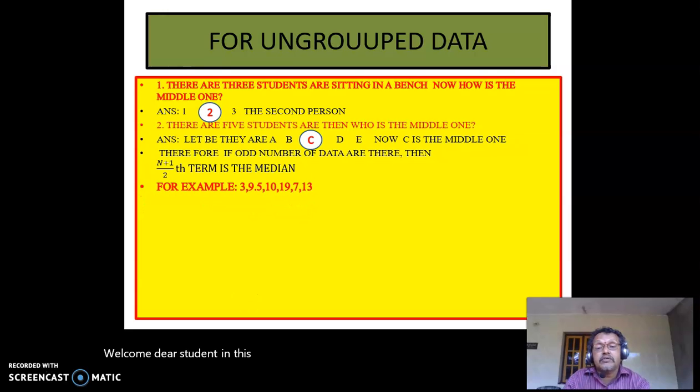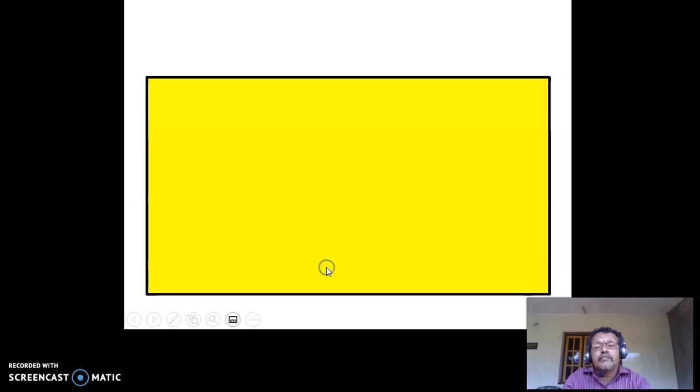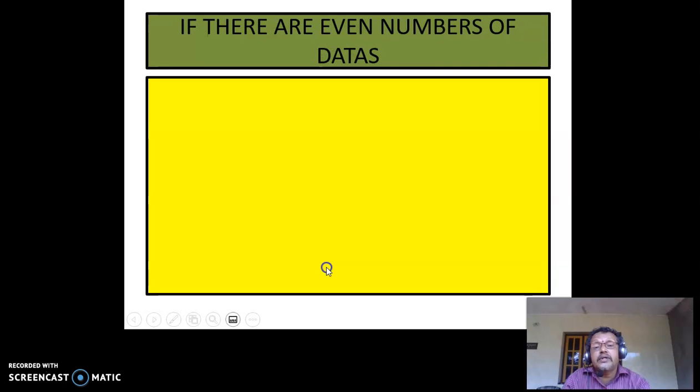For example, consider 3, 9, 5, 10, 17, 11, 7, 13. First arrange in ascending order: 3, 5, 7, 9, 10, 11, 13, 17 - seven terms. Here n plus 1 means 7 plus 1 by 2, equals 8 by 2, which is the fourth term. The fourth term is 9, so therefore 9 is the median. Median is nothing but the middle most score.